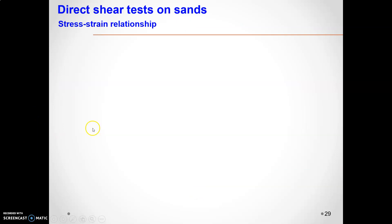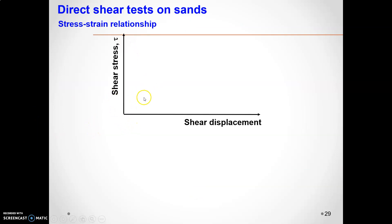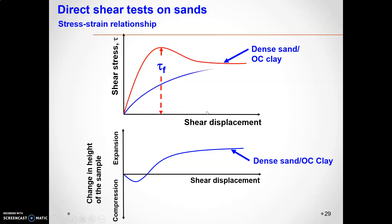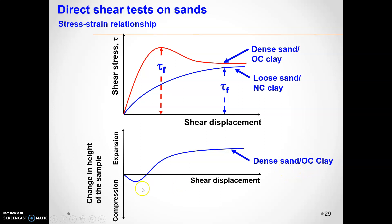Once you know normal stress and shear stress, you can draw a graph of shear stress versus normal stress. For dense sand or over-consolidated clay, the graph shows a peak maximum shear strength tau-f. For loose sand or normally consolidated clay, tau-f is lower. For dense sand and over-consolidated clay, the change in length of the sample shows both compression and expansion behavior, while for loose sand and normally consolidated clay it shows a different result.